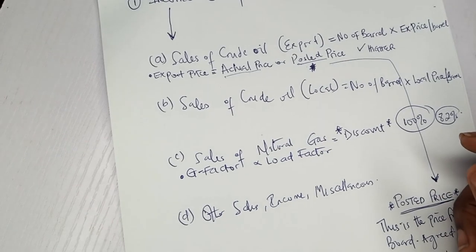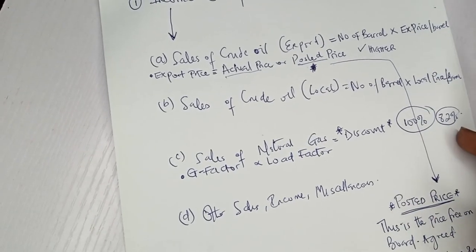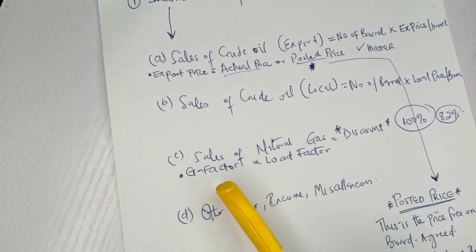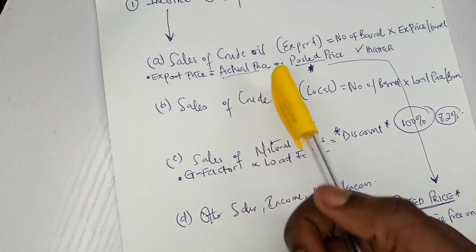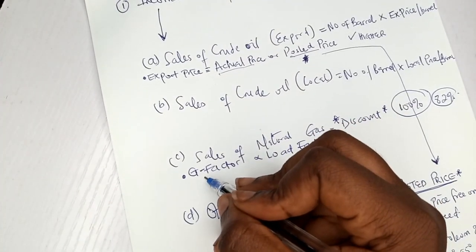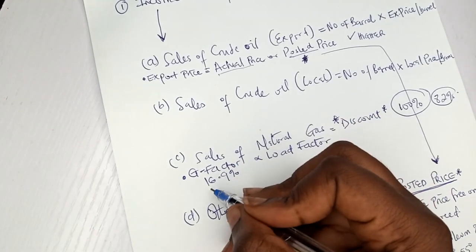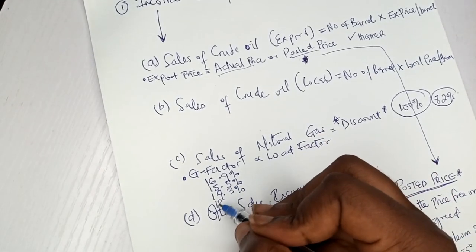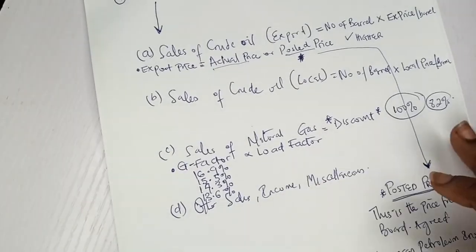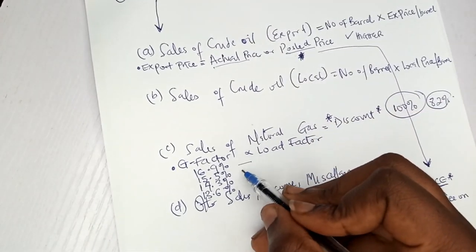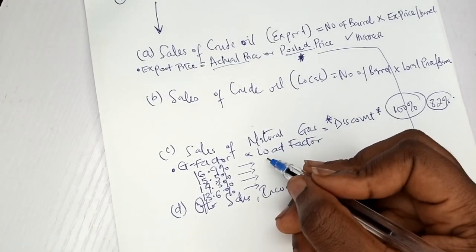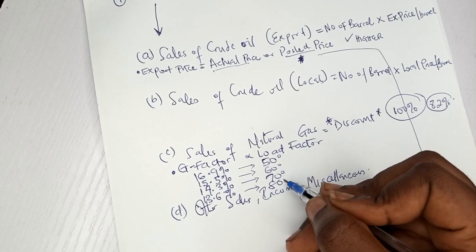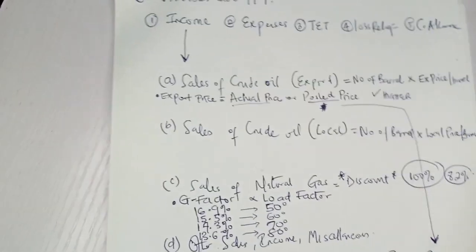The G factor is the gas production cost adjustment factor. There are four standard G factors to memorize: 16.9%, 15.5%, 14.3%, and 13.6%. These correspond to load factors of 50 degrees, 60 degrees, 70 degrees, and 80 degrees respectively. You memorize these by solving plenty of questions.